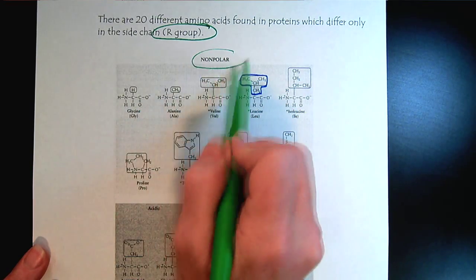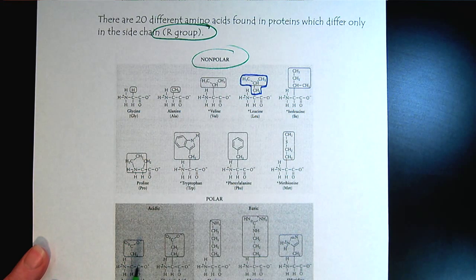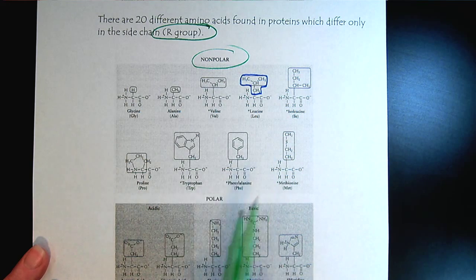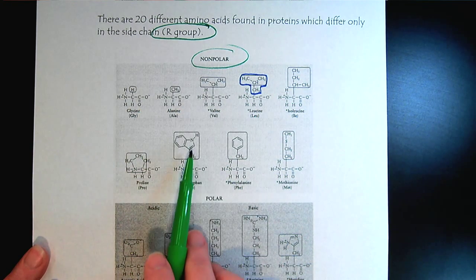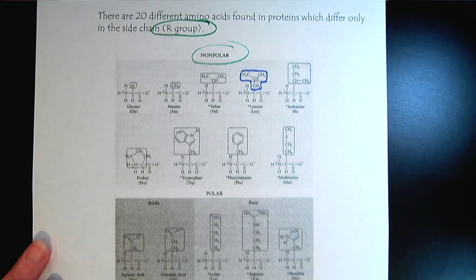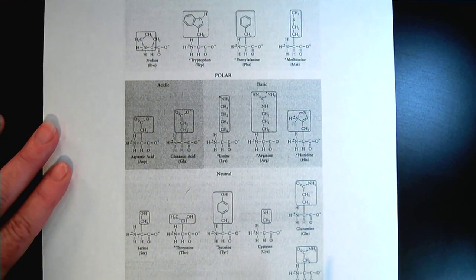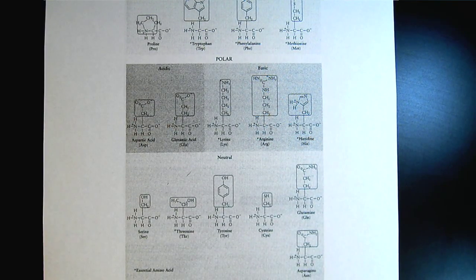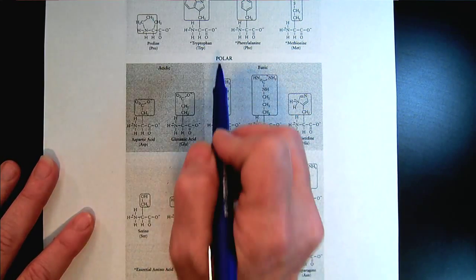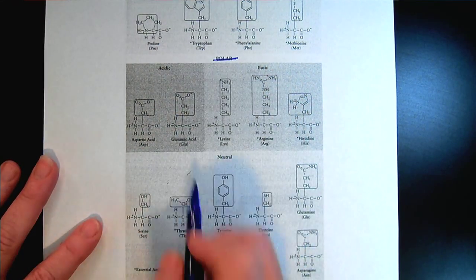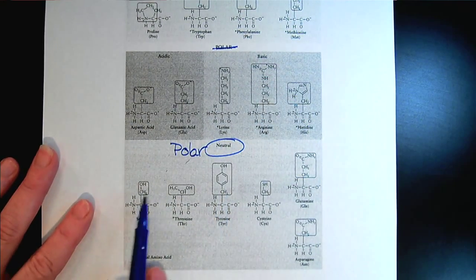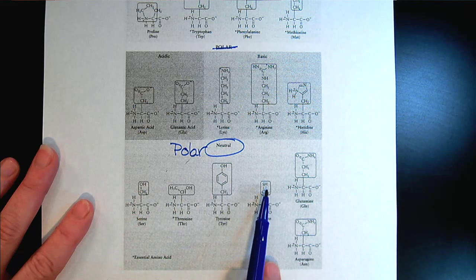For this first group, the R groups are all nonpolar. Even where we have a nitrogen, a sulfur, or another nitrogen, these are still considered nonpolar — this is an aromatic ring, which is why we don't recognize polarity there. The source I copied this table from called another group of amino acids simply 'polar,' but I prefer to classify them as polar neutral. Looking at those R groups, we see hydroxyl groups, thiol groups, and amides.